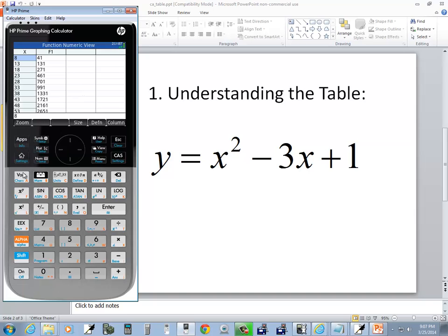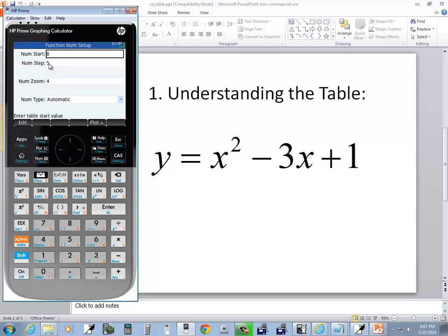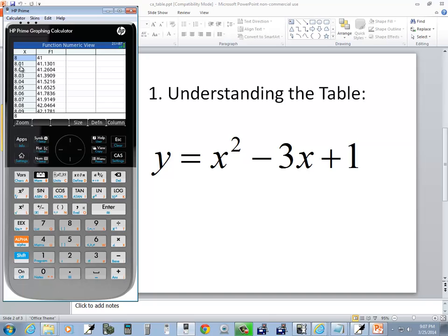Now, if I go back in my setup, Shift, Num, that's what those two do. Now, the step here doesn't have to go by fives. You could go by decimals. You could go by .01 and press Enter. So now, if I go back to my Num, 8, 8.01, 8.02, 8.03. So you can have it go by whatever you want.